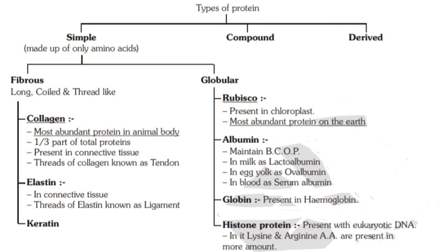Rubisco is the most abundant protein in the plant kingdom, present in the stroma of the chloroplast. Albumin maintains BCOP — blood colloidal osmotic pressure.